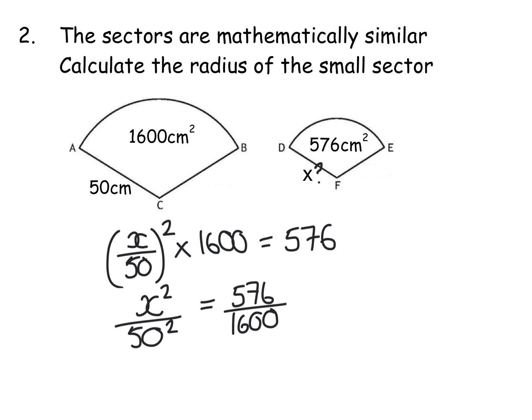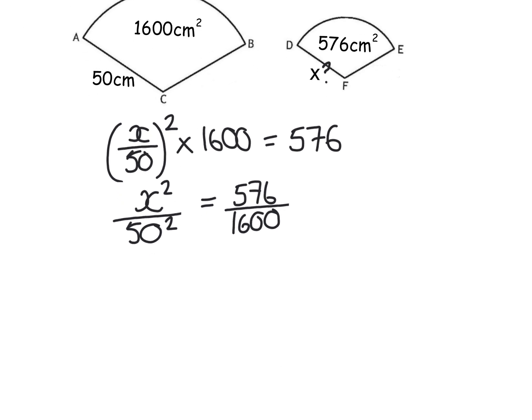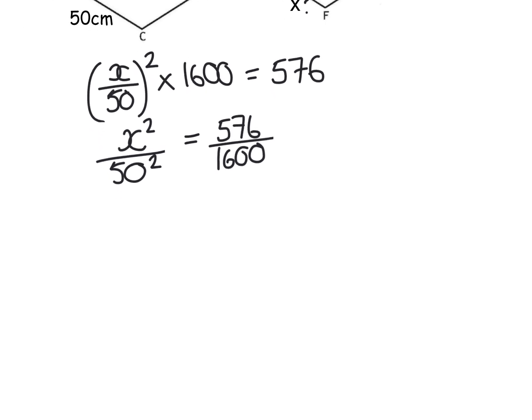Now, what I've actually got there, that 576 over 1600 is really just my volume scale factor at this point. Now what I'm going to do is create a wee bit of space. I'm going to cross multiply. So x squared will be my fraction times 50 squared, which gives me 900.